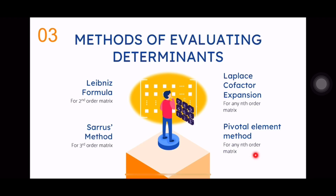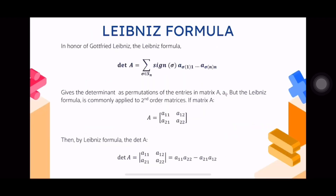The first method is the Leibniz formula, named in honor of Gottfried Leibniz. This formula gives the determinant as permutations of the entries in the matrix A. The easiest application of the Leibniz formula is on second-order matrices, that is, a 2x2 matrix. For a 2x2 matrix A with entries a11, a12, a21, a22, the determinant is simply the product of the diagonals.